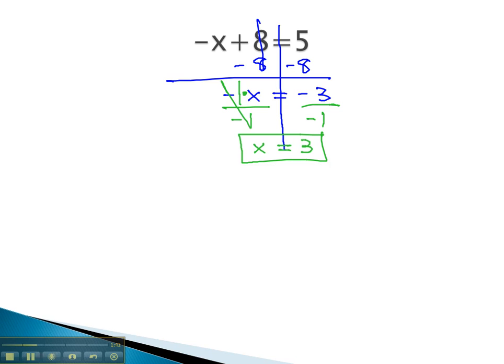We have our solution. Let's verify that it is correct by checking our answer. By replacing the x with the number we found. Negative x or negative 3 plus 8, is that equal to 5? Well, with negative 3 and positive 8, we see the positive is bigger. 8 minus 3,